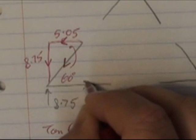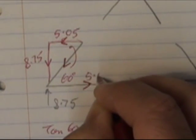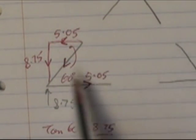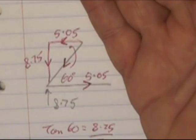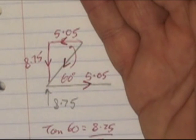In here, 5.05. So now my verticals balance and my horizontals balance. That is a complete free body diagram for that joint.